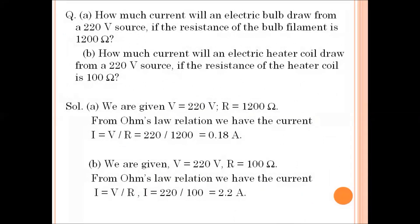Now we have numericals based on Ohm's law. Part A: How much current will an electric bulb draw from a 220 volt source if the resistance of the bulb filament is 1200 ohm? We are given potential difference = 220 V and resistance = 1200 Ω. On applying Ohm's law, we can calculate the current as 0.18 ampere.